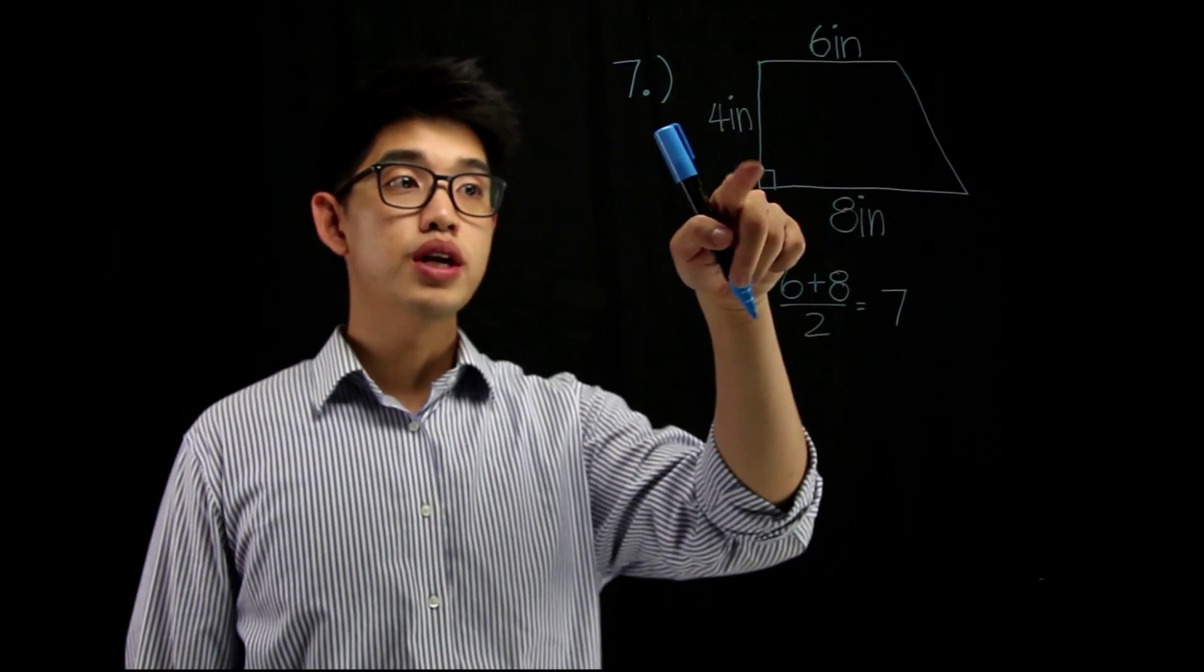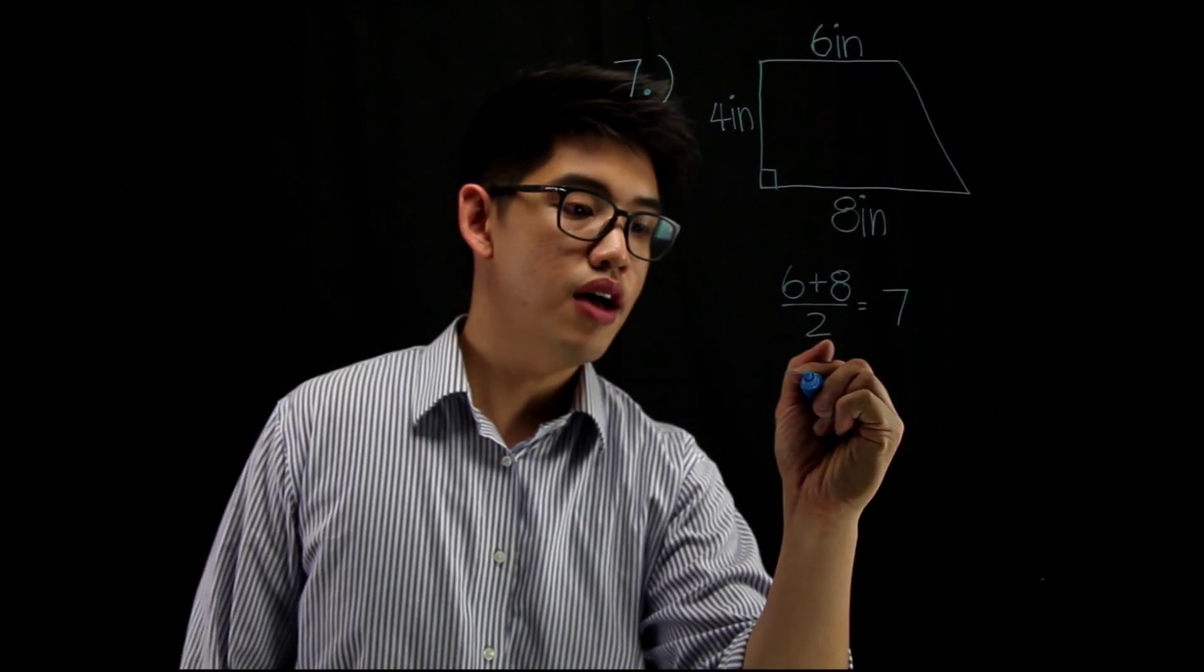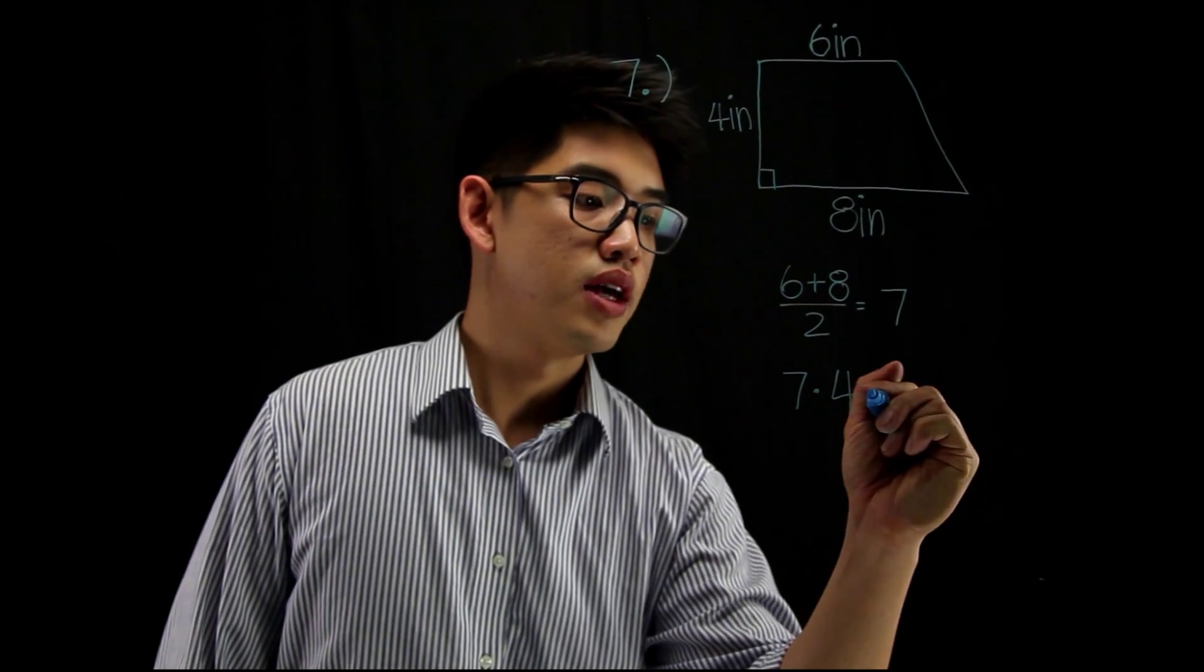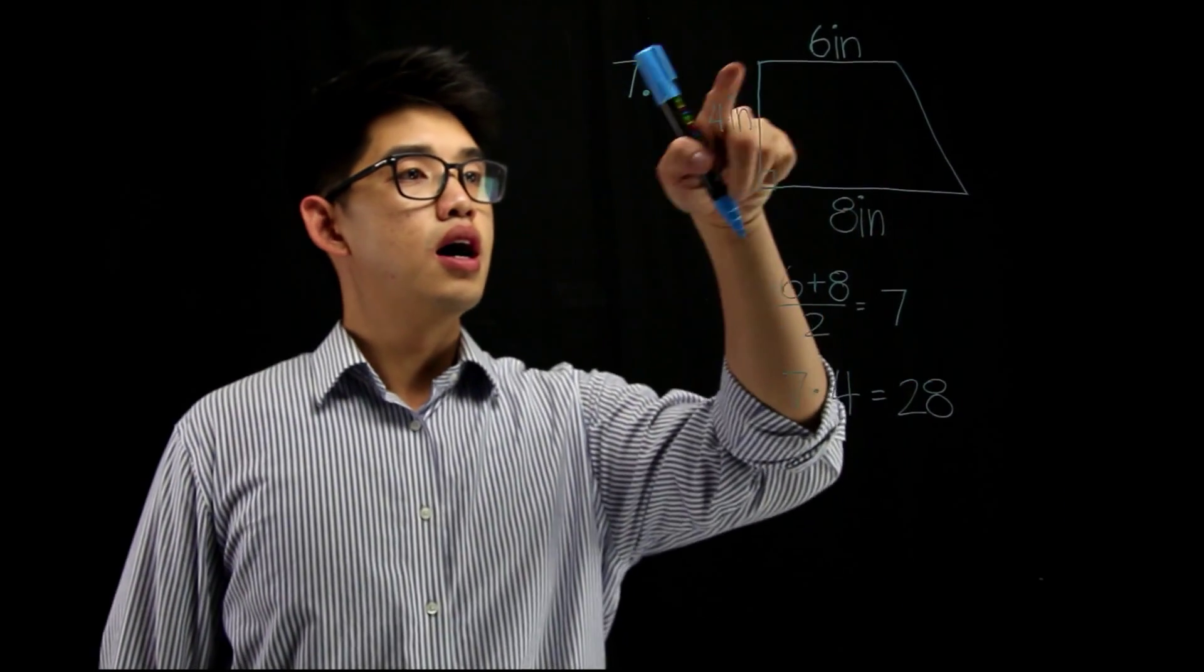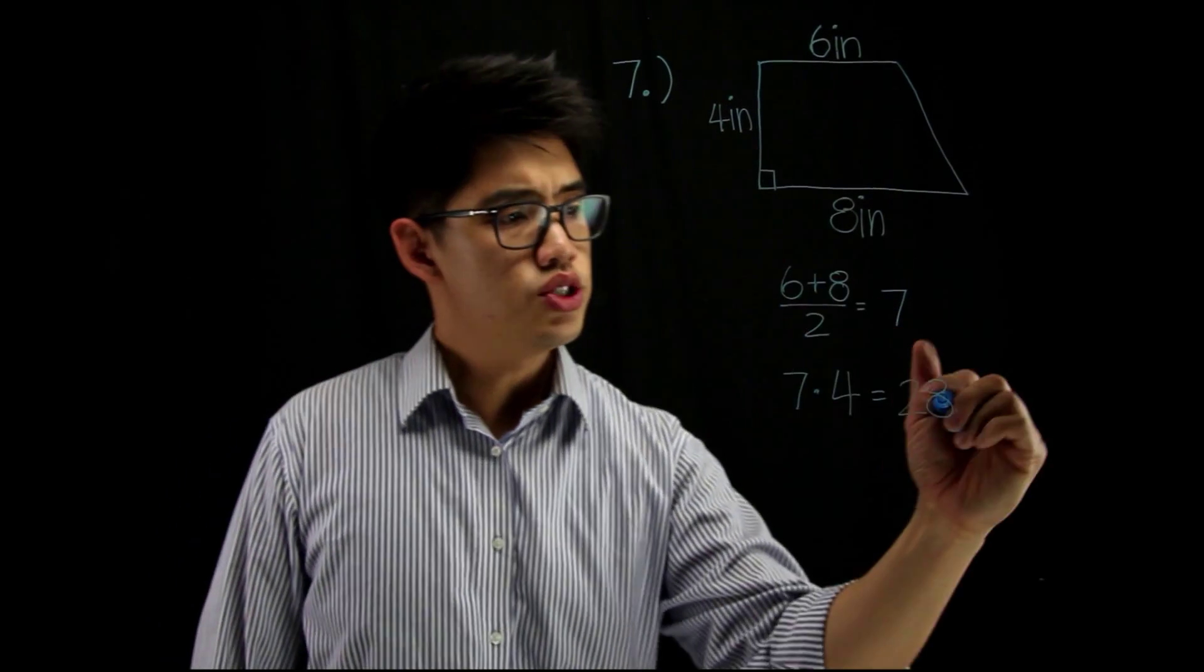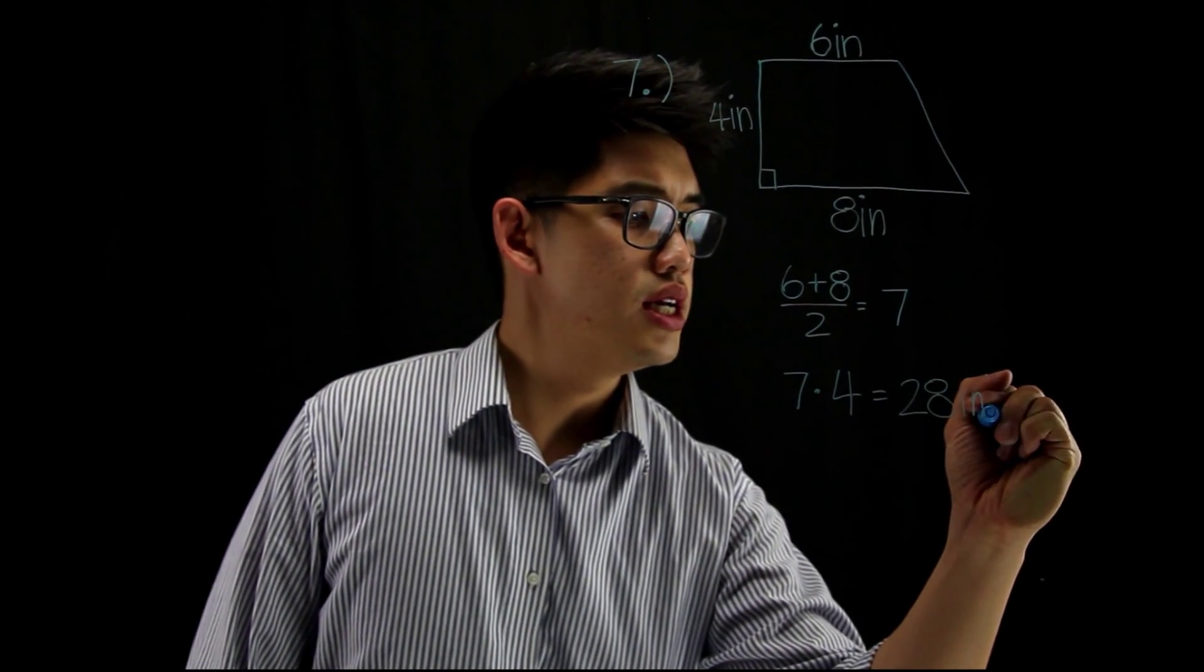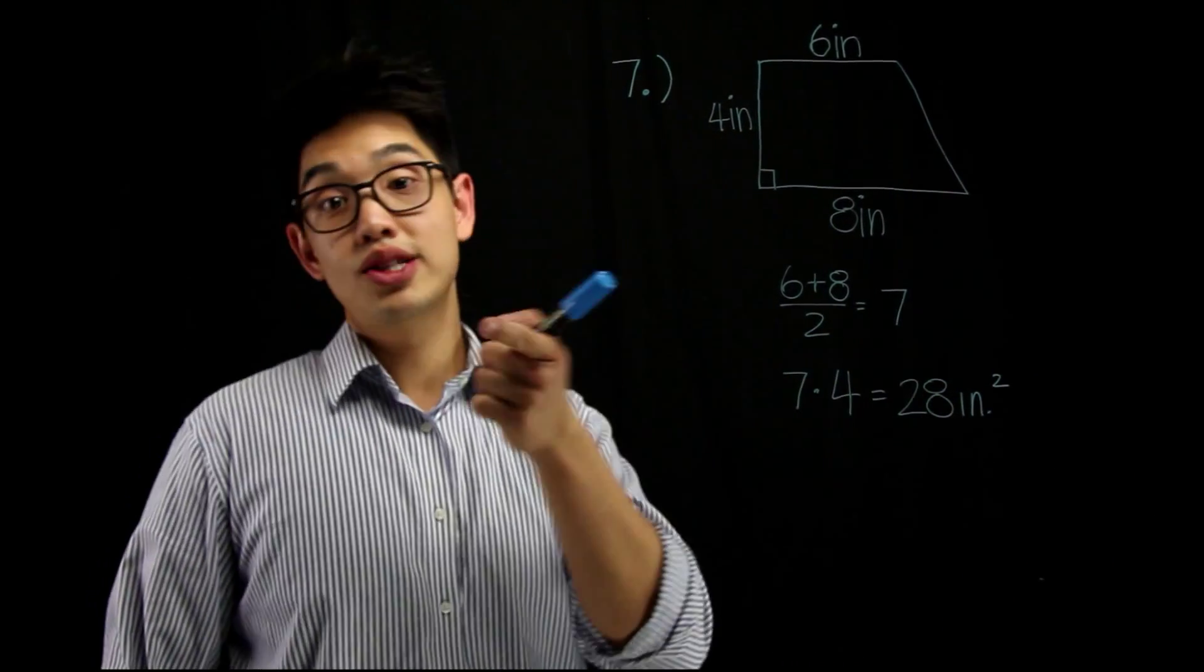Once we have 7, we can then multiply it by the height. So, 7 times 4, that gives me 28. And since the units are in inches, we can write 28 inches squared. And that's our answer.